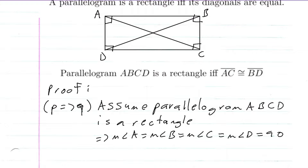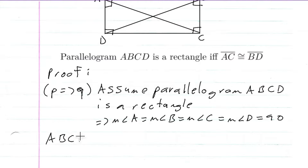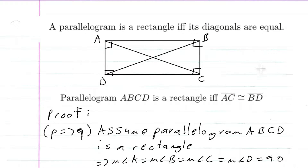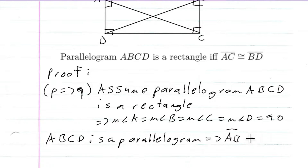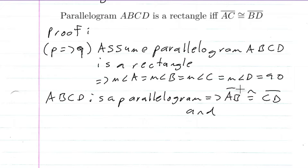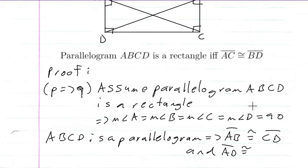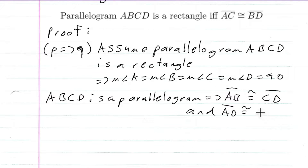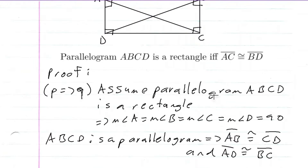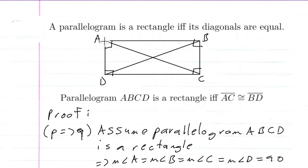Remember, we know that ABCD is a parallelogram, which implies that the opposite sides are congruent. So AB is congruent to CD, and AD is congruent to BC. So our strategy is we're going to consider triangle ADC and triangle BCD, because we know these two are congruent. We know this side is congruent to this side, so we have side, angle, side.